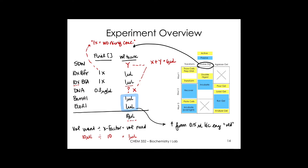BSA is just another protein added as a molecular crowder or filler to ensure everything is thoroughly and evenly mixed throughout the 10 µL solution. It prevents DNA and enzymes from clumping together and ensures even dispersion.